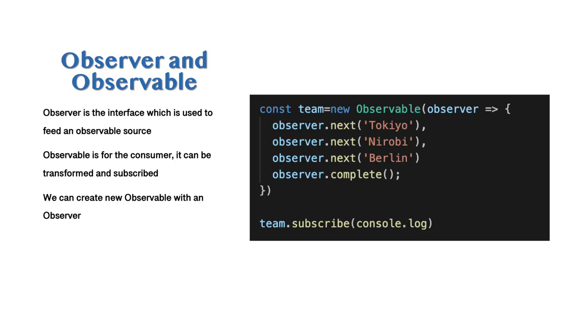The next most important thing is: what is the difference between observer and observable, and what is the difference between observable and subject? We need to clear that out before taking the next step. An observer is the interface used to feed an observable source. In our case, the conveyor belt would be the observer. Observable is for the consumer — you have the capacity to observe, so you become observable. It can be transformed and subscribed.